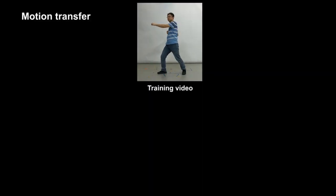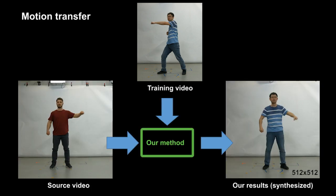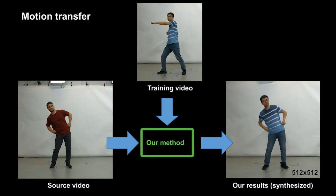Given one single monocular training video of a target person and a source video of another person, our method allows us to map the source motion to the target person.